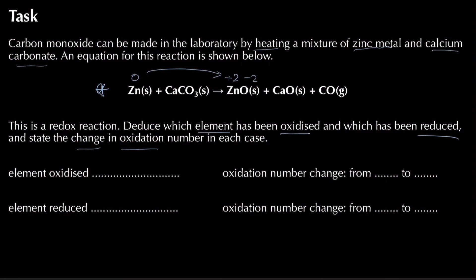Working left to right: zinc is zero on the left because it's uncombined, and plus two on the right (since oxygen must be minus two), so zinc goes from zero to plus two and is oxidised — remember OIL RIG, oxidation is loss. For calcium, it's plus two on both sides as an ion, so there's no change in oxidation state and we move on.